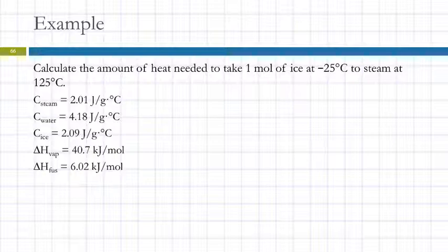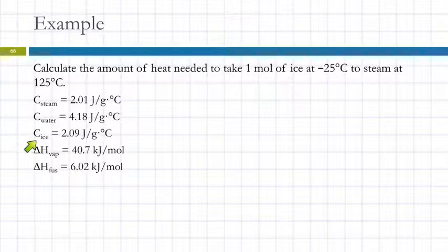Let's do an example — calculating the heat needed to take one mole of ice at minus 25 degrees Celsius to steam at 125 degrees Celsius. Information like specific heat capacities, heat of vaporization, and heat of fusion would either be given to you or would be on the information sheet on an exam. On a homework problem or experiment, you might have to look it up in your textbook.